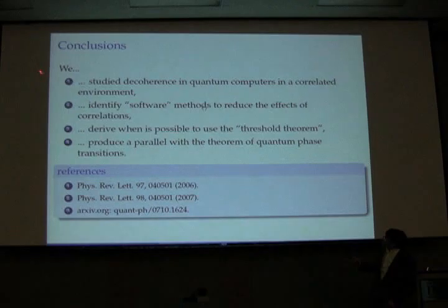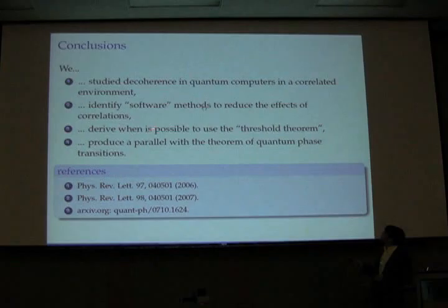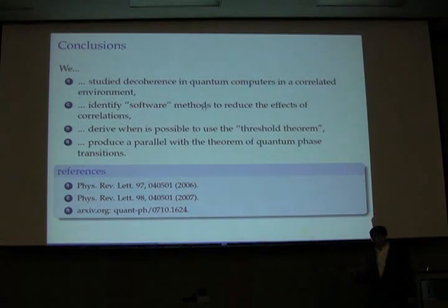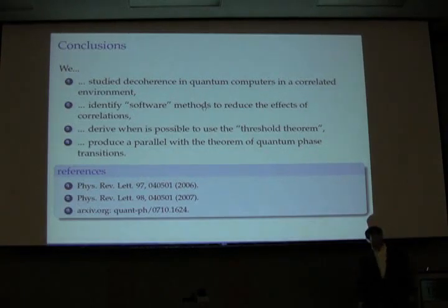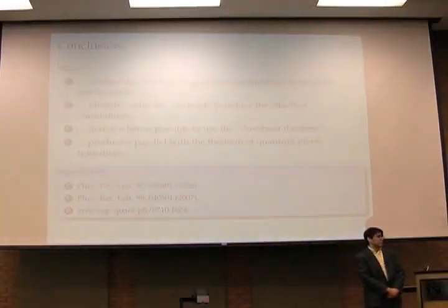In conclusion, we studied decoherence in a quantum computer in a correlated environment. We show that there are software methods available, and that it is possible to derive the threshold theorem using stochastic error models even if you start with a strongly correlated environment. There is a strong parallel with the theory of quantum phase transitions. Thank you very much.